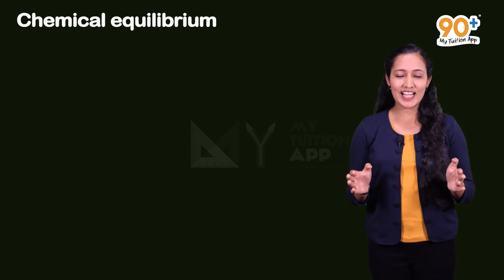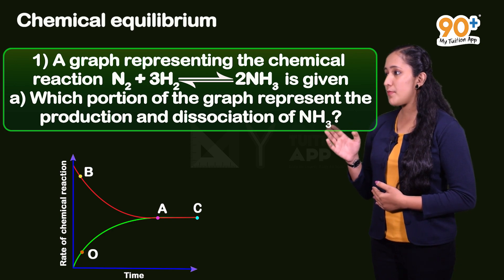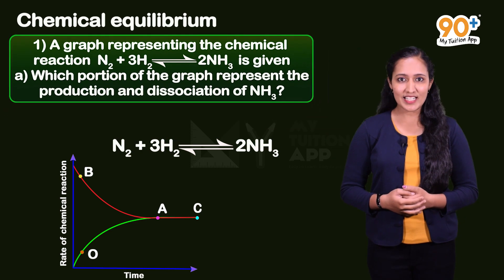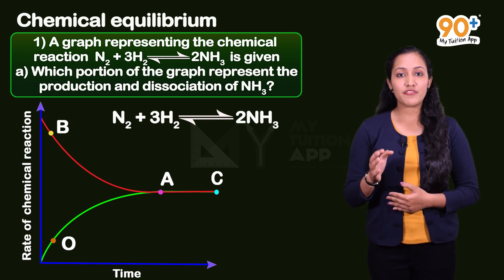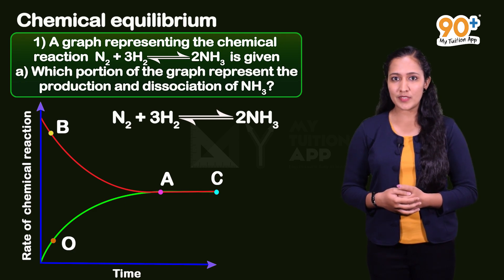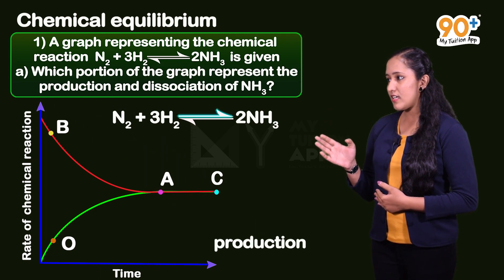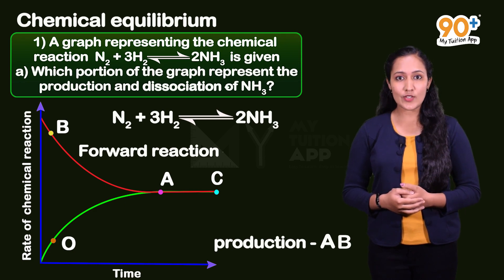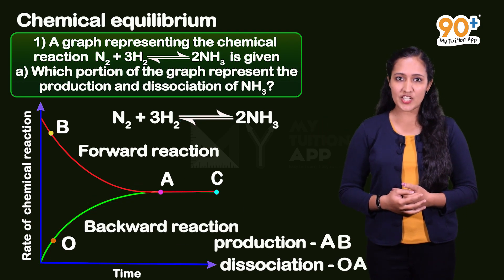Now let us discuss the previous year questions on this topic. The first question: a graph representing a chemical reaction is given. A - which portion of the graph represents the production and dissociation of NH3? The forward reaction, representing formation of ammonia, is shown by the AB portion of the graph. The backward reaction, showing dissociation of NH3, is represented by the OA portion of the graph.